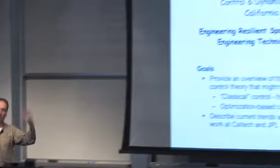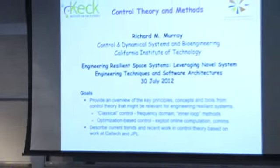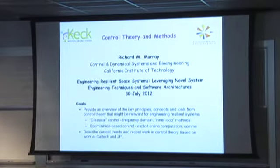I want to say a little bit about control theory and methods today. I'll give you an overview of some of the key principles and concepts, and a little bit of the tools used in this field. I'll talk both about classical control theory, which is the roots of the discipline, and also about more recent things looking at optimization-based control that are enabled by modern computation and fit very nicely with spacecraft applications. Then I'll say a little bit about where the field is heading, and the sorts of problems relating to my research and things we've done with JPL.